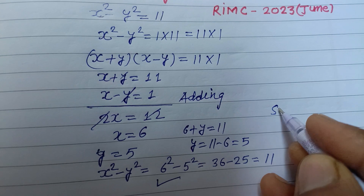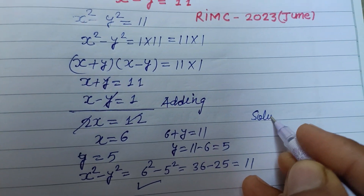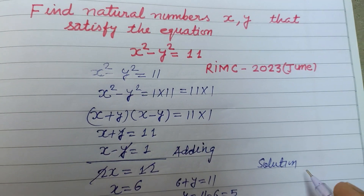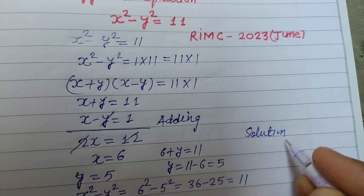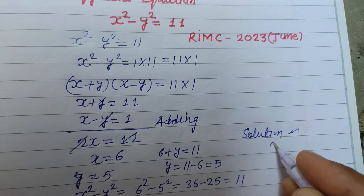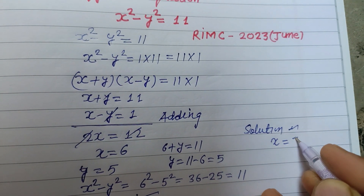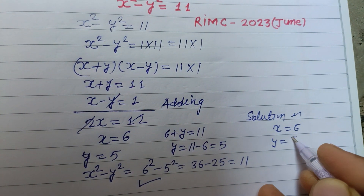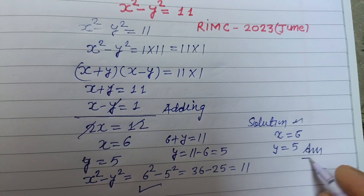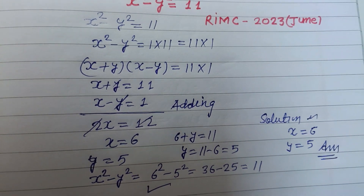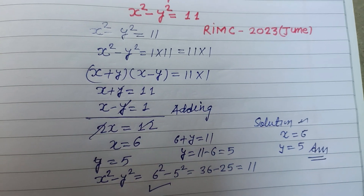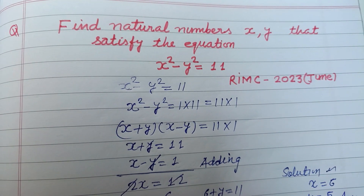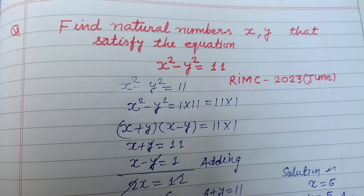Therefore the solution is x equal to 6 and y equal to 5, and this is our answer. I hope you got it. Please like the video, subscribe the channel. Thanks very much.